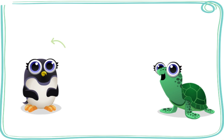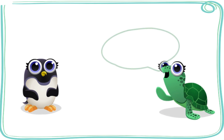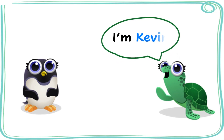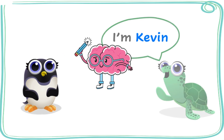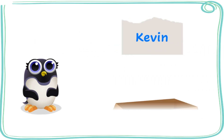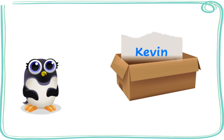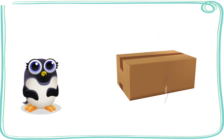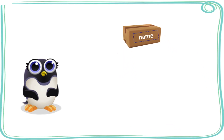Wouldn't it be great if the brain had some sort of storage system to avoid this? Like, what if every time someone new tells you their name, your brain writes it down on a piece of paper, puts it in a box, labels the box, and stores it away?